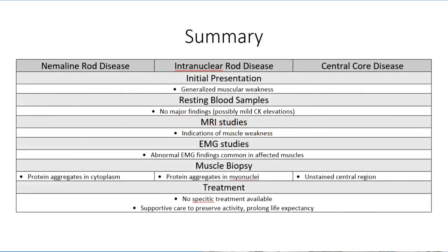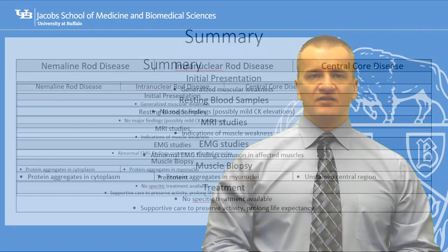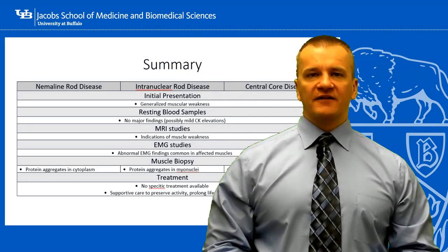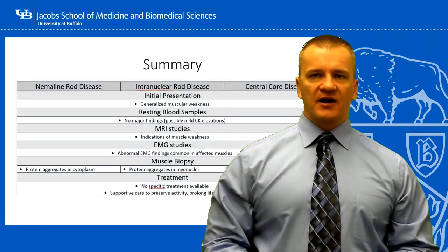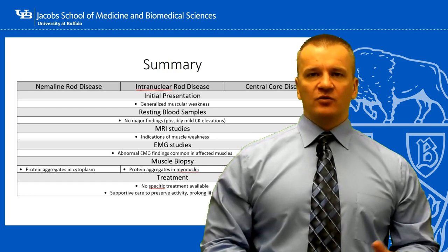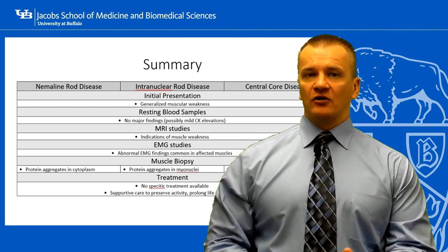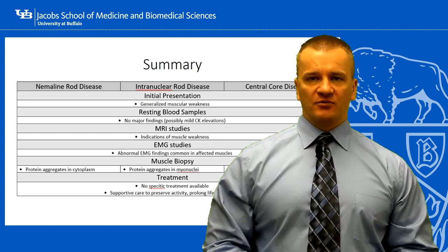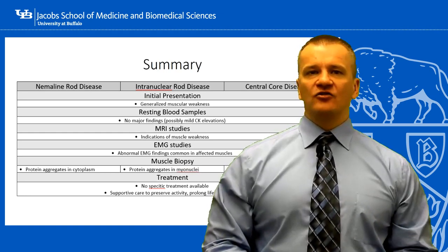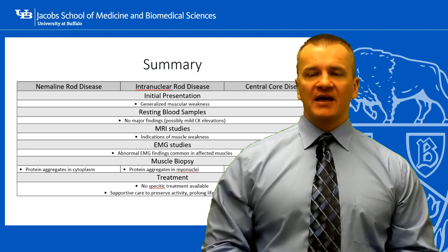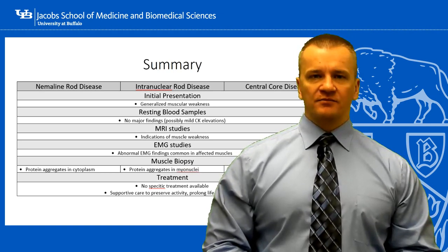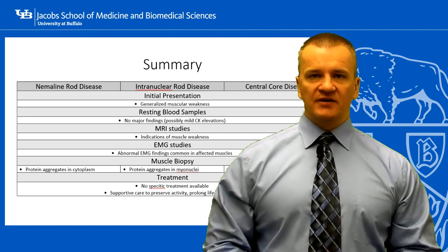Once again, there is no cure for central core disease, so treatment is focused on preserving independence for the patient and prolonging their life expectancy. This concludes our session on the congenital myopathies. In the remaining three sessions, we'll switch focus away from the congenital, or genetically acquired, forms of muscle disease and turn towards acquired forms of muscle disease that are contracted at a later point in time and are independent of genetics. For the next session, the topic of discussion will be the inflammatory myopathies.